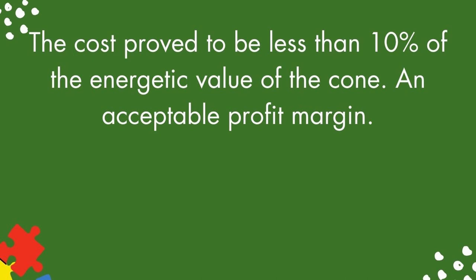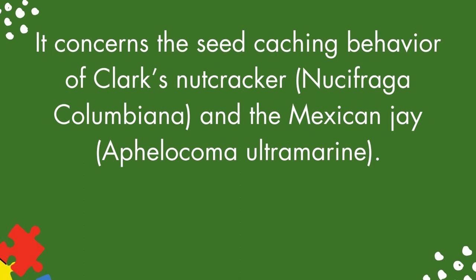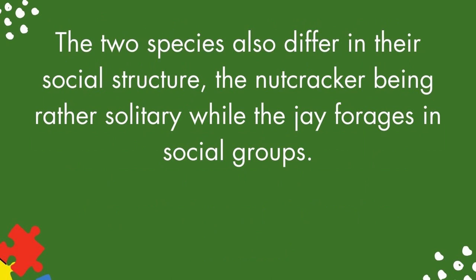A paper in the 1996 Animal Behavior by Bednikoff and Balda provides a different view of the adaptiveness of social learning. It concerns the seed-caching behavior of Clark's Nutcracker, Nucifraga Columbiana, and the Mexican Jay, Aphelocoma Ultramarina. The Nutcracker is a specialist, caching 30,000 or so seeds in scattered locations that it will recover over the months of winter. The Mexican Jay will also cache food but is much less dependent upon this than the Nutcracker. The two species also differ in their social structure, the Nutcracker being rather solitary while the Jay forages in social groups.